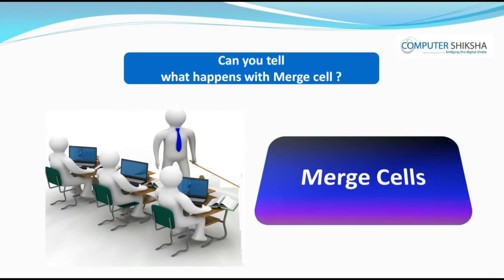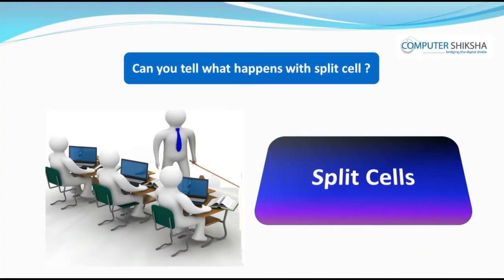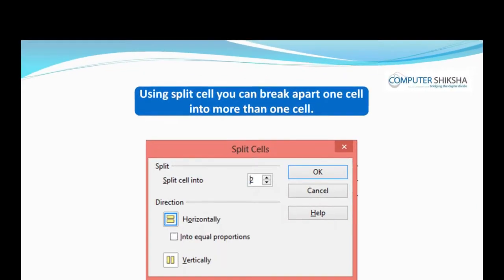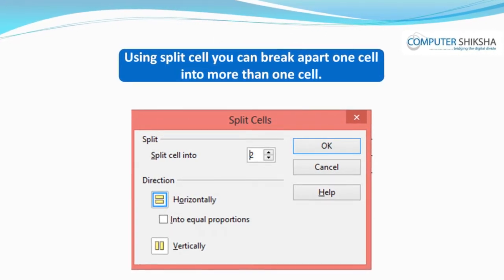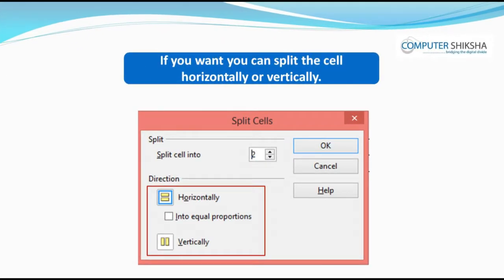Can you tell what happens with merge cell? Merge means to unite or combine as one. Merge cell is used to merge two or more cells into one. Can you tell what happens with split cell? Split means to break apart or make many pieces from one. Using split cell, you can break apart one cell into more than one cell. If you want, you can split the cell horizontally or vertically.